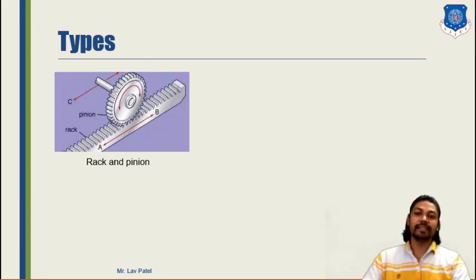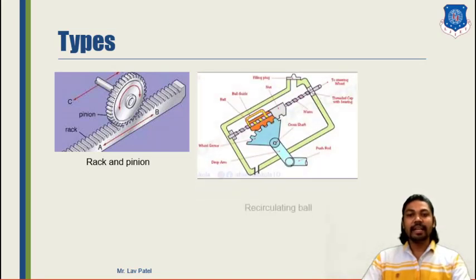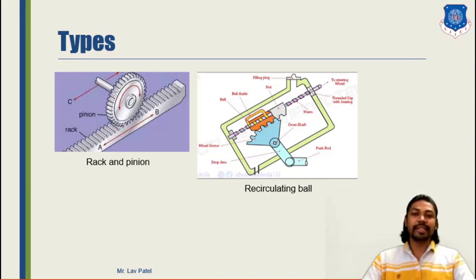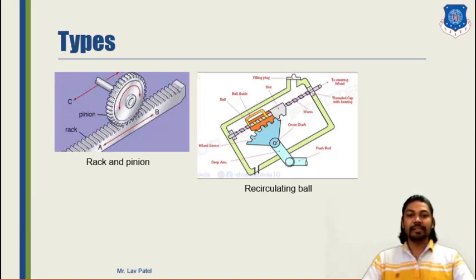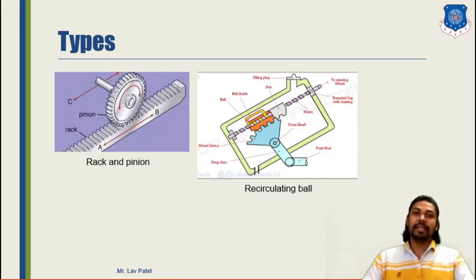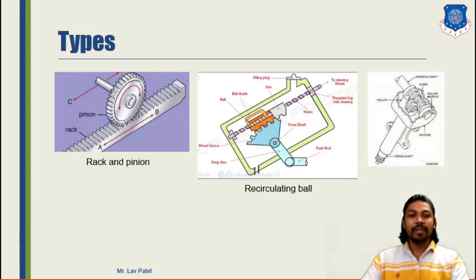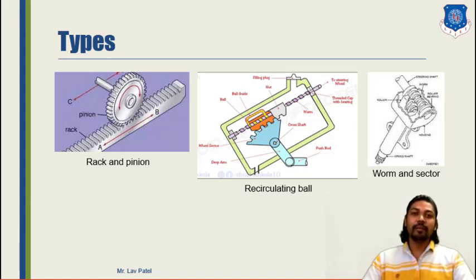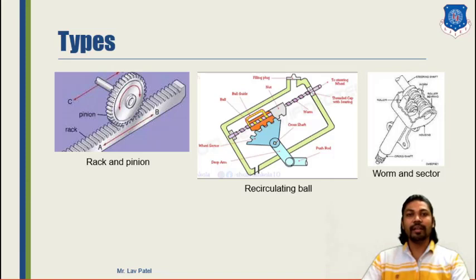Hydraulic as well as electrical assist systems are also found in rack and pinion type systems. The second type is the recirculating ball type steering system, used in different special purpose vehicles like tractors. It includes different rods and recirculating balls provided on the gear section, allowing rotational motion to be converted into translational motion to turn the vehicle. The third type is the worm and sector type, in which recirculating balls are provided in the worm, enabling the driver to turn the vehicle left or right.